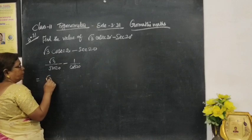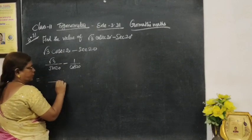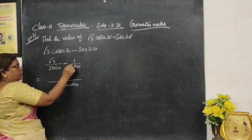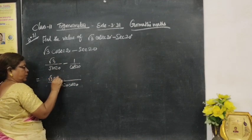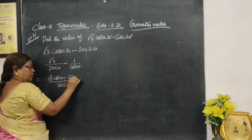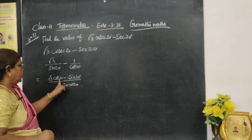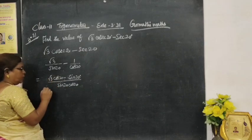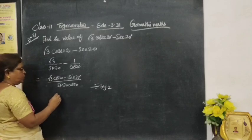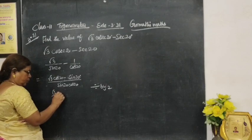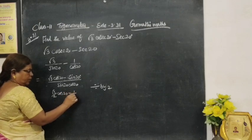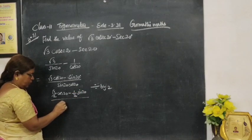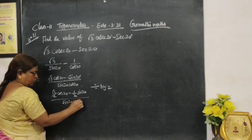So √3. Now cross multiply. Now take LCM. LCM is sin 20° cos 20°. Cross multiply. √3 cos 20° - sin 20°. Correct. √3 cos 20° - sin 20°. So (√3/2) cos 20° - (1/2) sin 20° over sin 20° cos 20°.